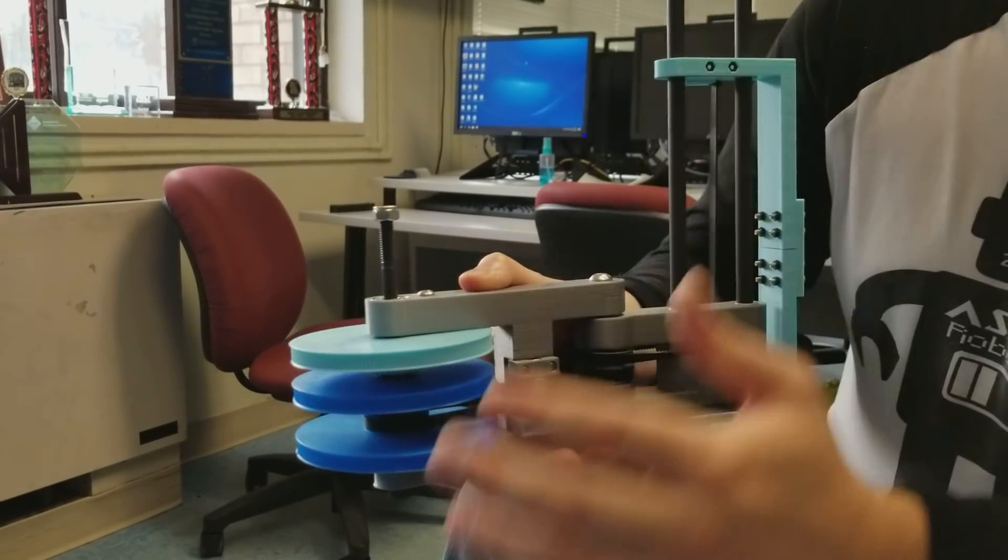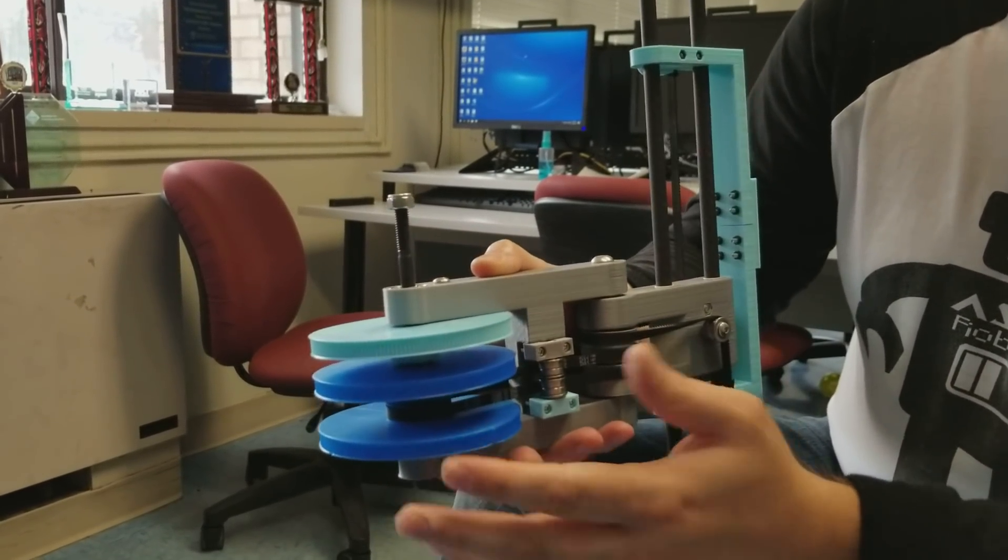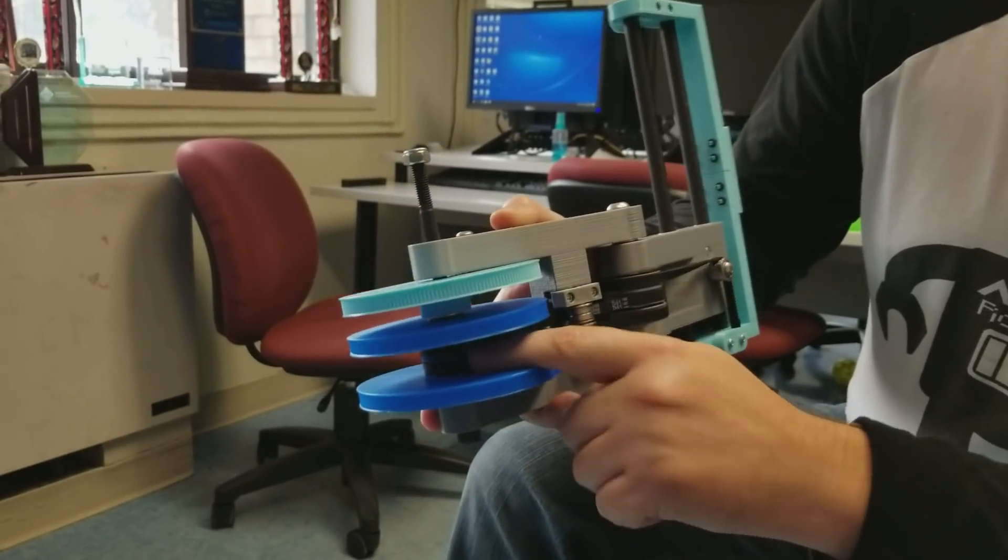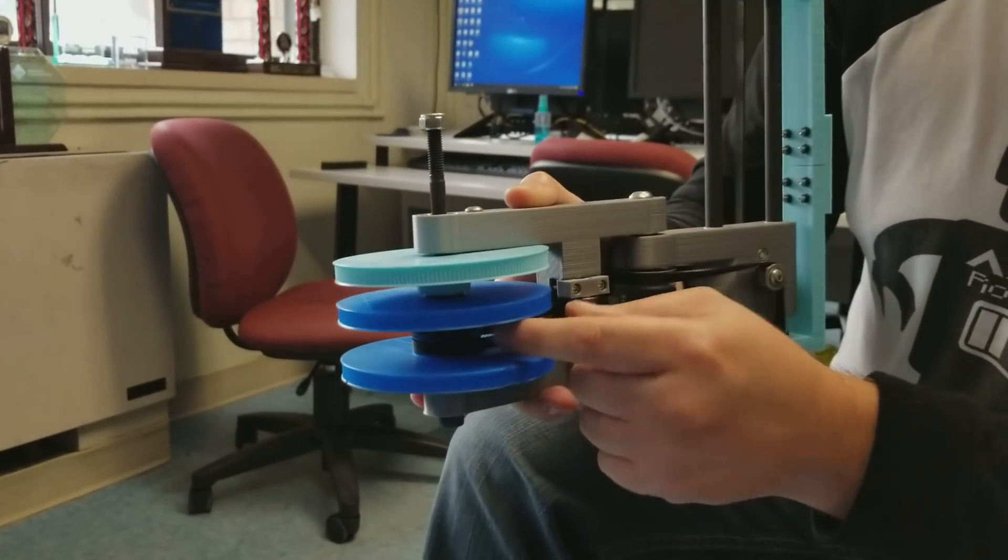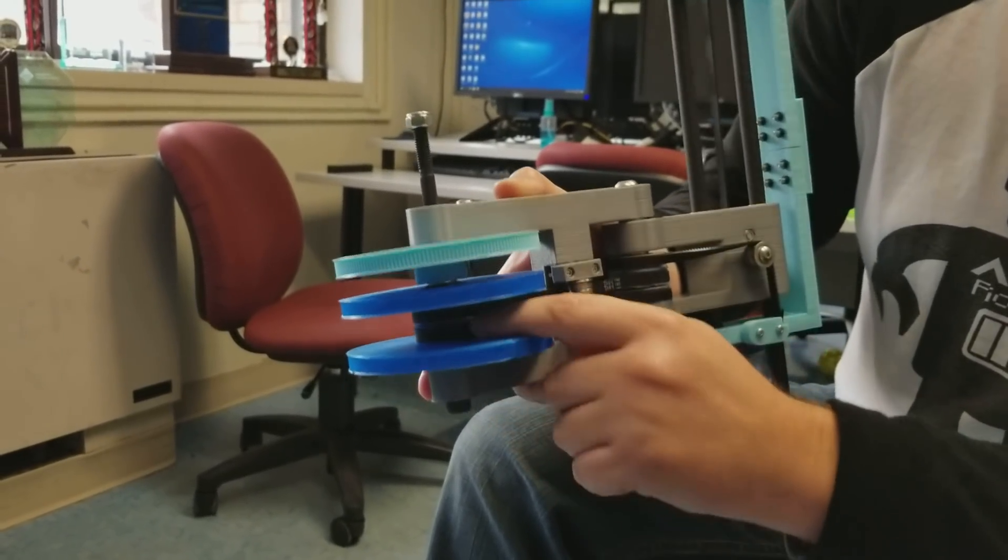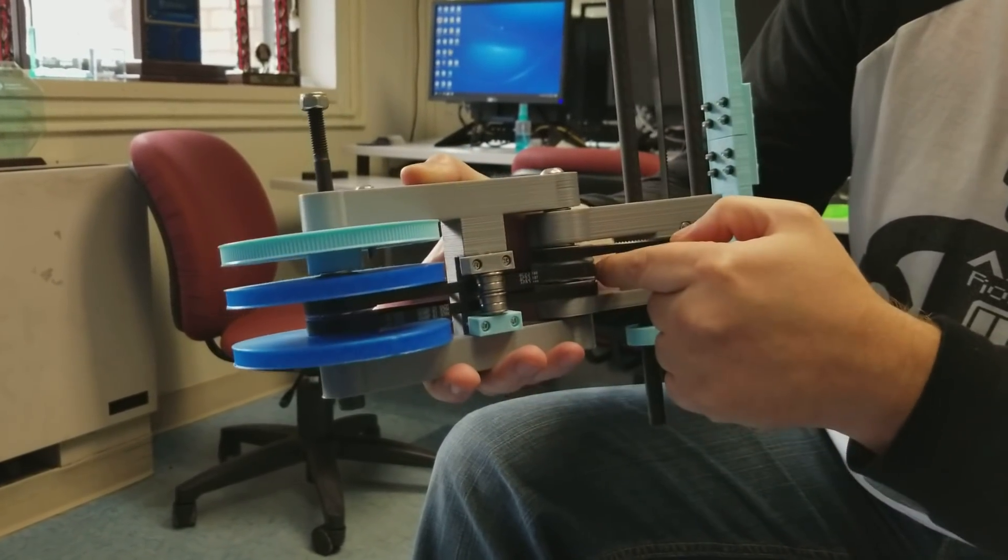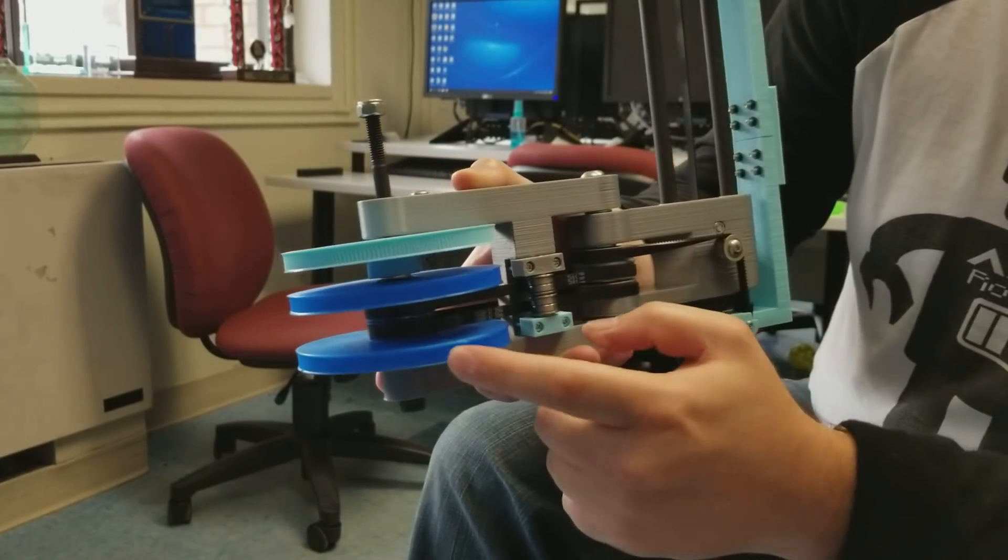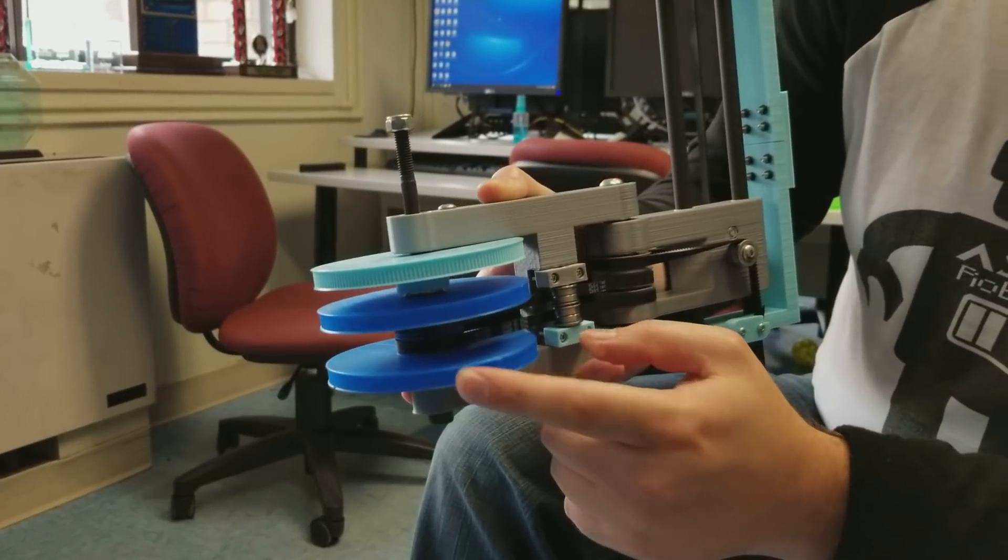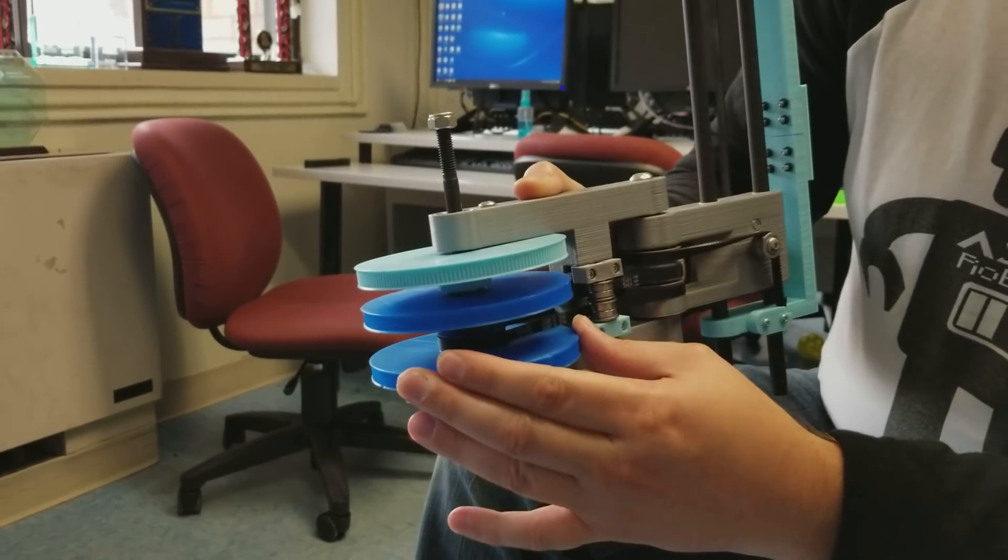We have some extreme mechanical advantage here. You'll see that we have 55 teeth on these small pulleys, and so this is just a transmission line here, so we have no mechanical advantage here. But you can see these pulleys here have 168 teeth.